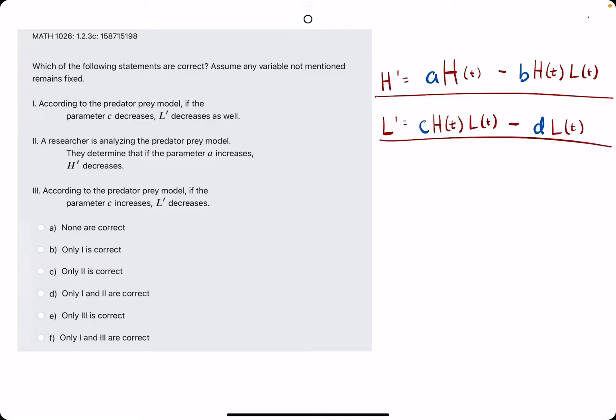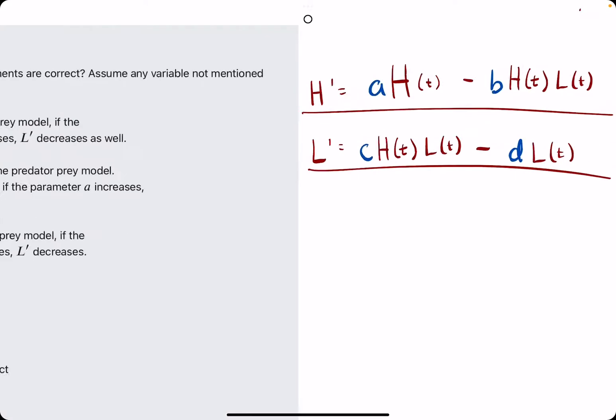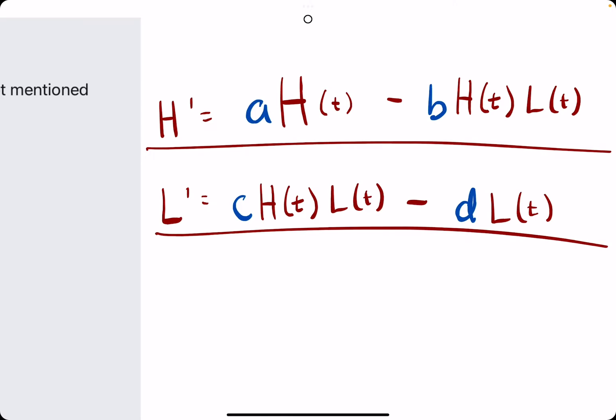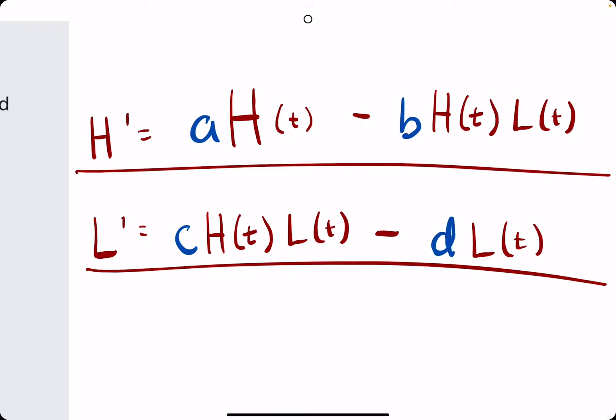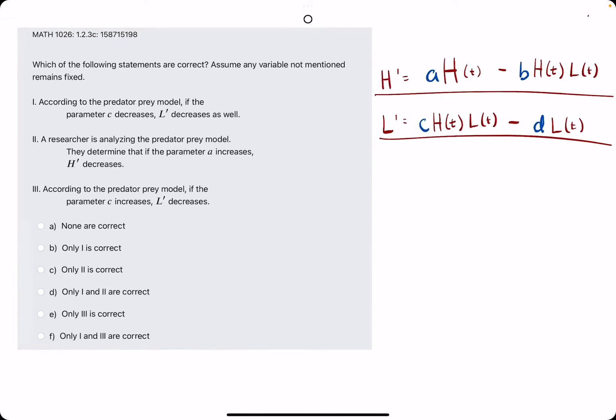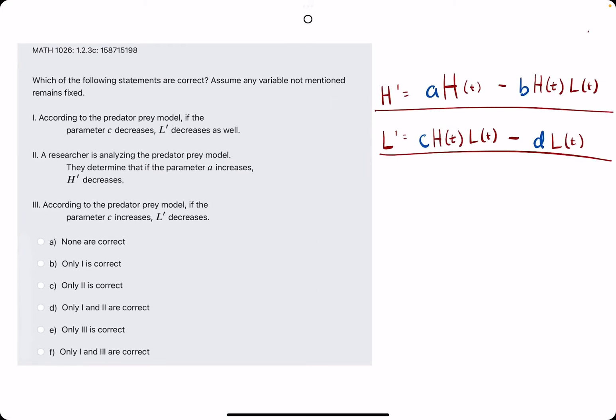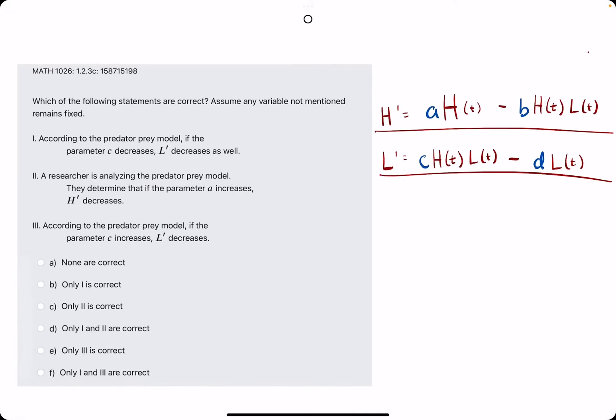Okie dokie. In this problem, they're asking about this predator-prey model. I believe this is the right form. If anyone has any corrections, please let me know because it's very Empo-exclusive, this one. But this should lead you to the right answers regardless.